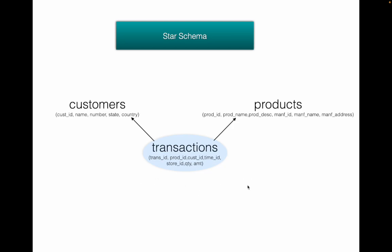You would also have a customers dimension table holding customer-related info like customer ID, name, phone number, state, and country. Then you would have a time dimension table with a time ID, day, month, quarter, and year indicating when the product was purchased.